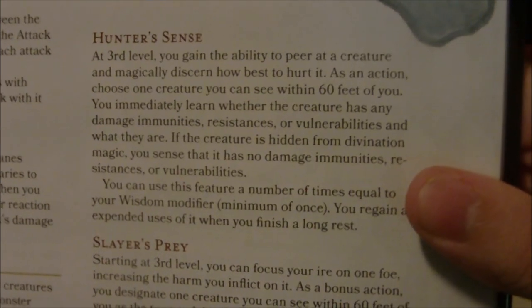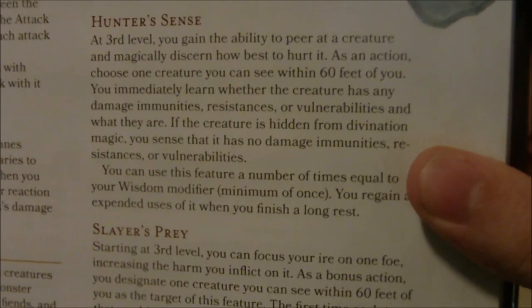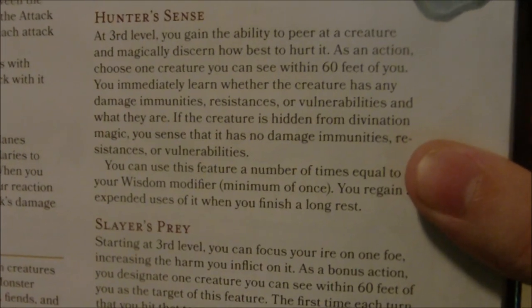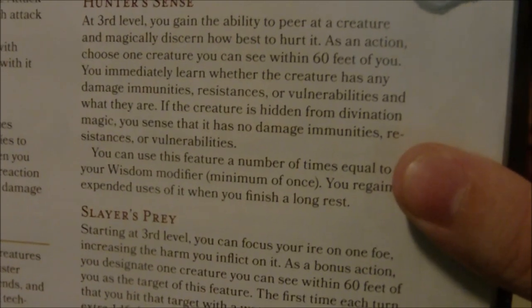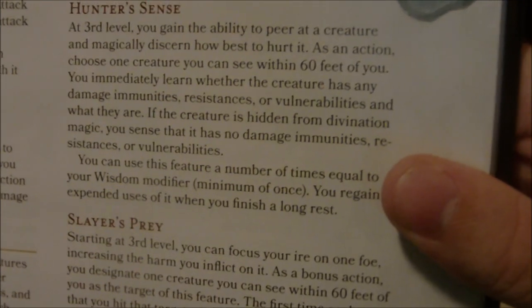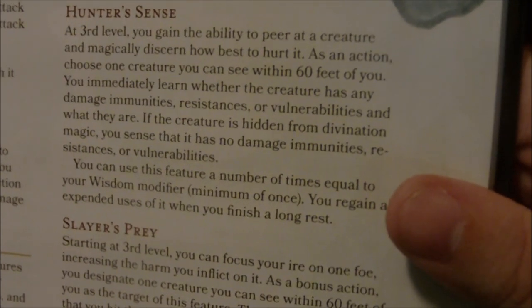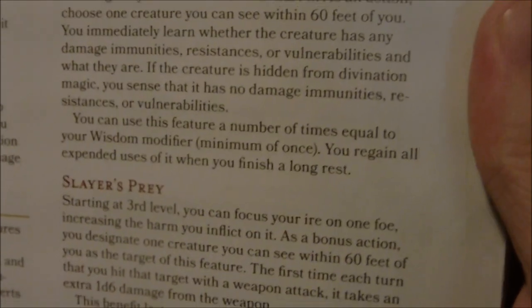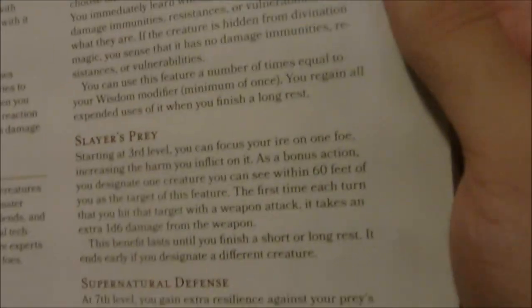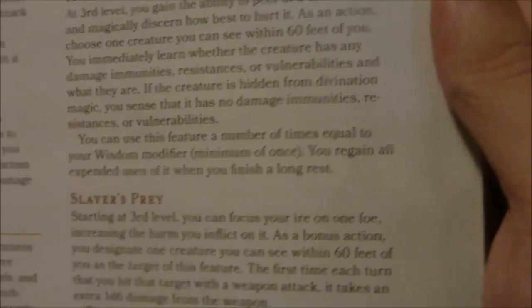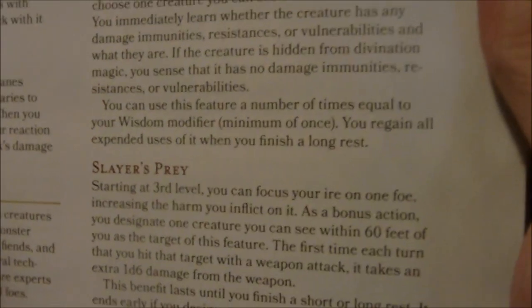At third level they gain Hunter's Sense: you gain the ability to peer at a creature and magically discern how best to hurt it. As an action, you choose one creature within 60 feet of you and immediately learn whether the creature has any damage immunities, resistances, or vulnerabilities, and what they are. If the creature is hidden from divination magic, you sense that it has no immunities, resistances, or vulnerabilities. You can use this feature a number of times equal to your Wisdom modifier — minimum of once — and regain all uses when you finish a long rest. If you're going up against something you've never seen before and the DM wants to keep its abilities hidden, this lets you learn some information about it, which I think is actually kind of cool.